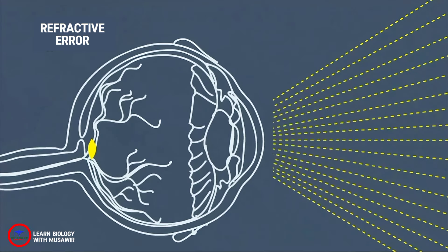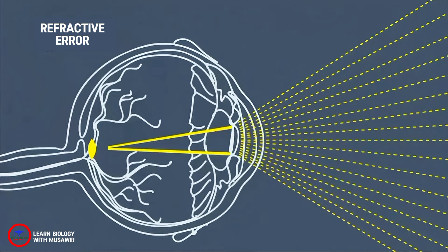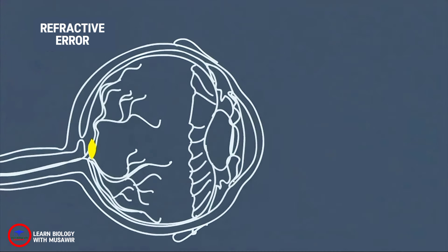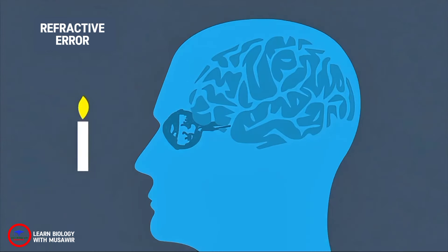The light rays then pass through the lens which further bends the rays and focuses them on the retina, the light-sensitive tissue lining at the back of the eye. The retina converts the light rays into impulses which are then sent through the optic nerve into the brain where they are recognized as images.